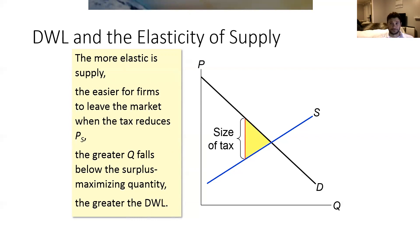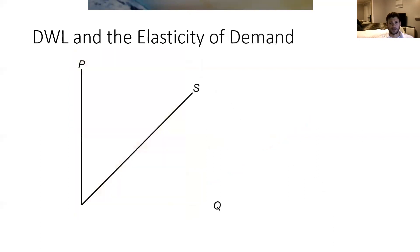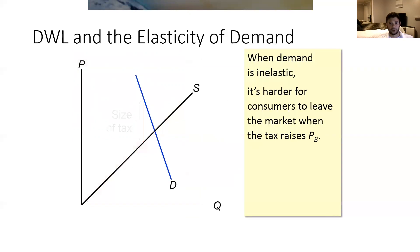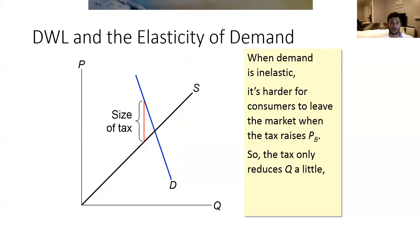Now, what about demand? We can run the same experiment. If demand is very vertical — very inelastic — it's now harder for consumers to get out of the way when the pain comes. The pain for consumers is that the tax pushes up the price the buyers face. If their demand is inelastic, this only drives the buyers away a little bit, meaning the deadweight loss is fairly small because we don't miss out on a lot of mutually beneficial trades.